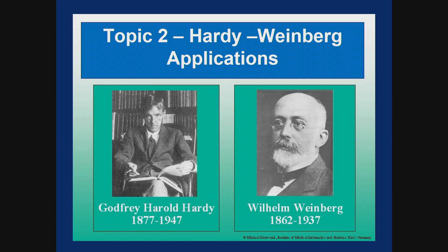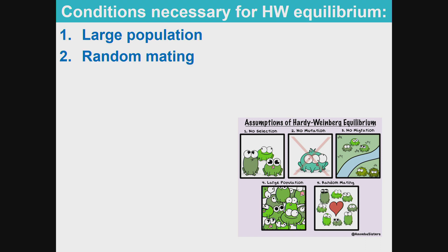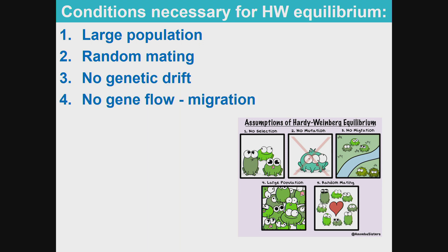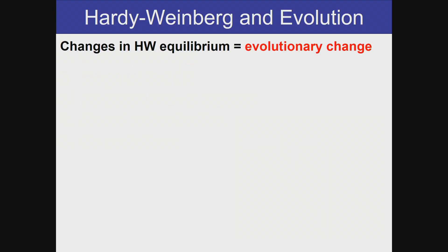Let's talk about when the Hardy-Weinberg theory applies. The conditions necessary for Hardy-Weinberg equilibrium — in other words, no evolution — include: large population, random mating, no genetic drift, no gene flow or migration, no natural selection, and no mutations. Anything that disrupts any of these factors will result in evolution. So changes in the Hardy-Weinberg equilibrium means there is evolutionary change.